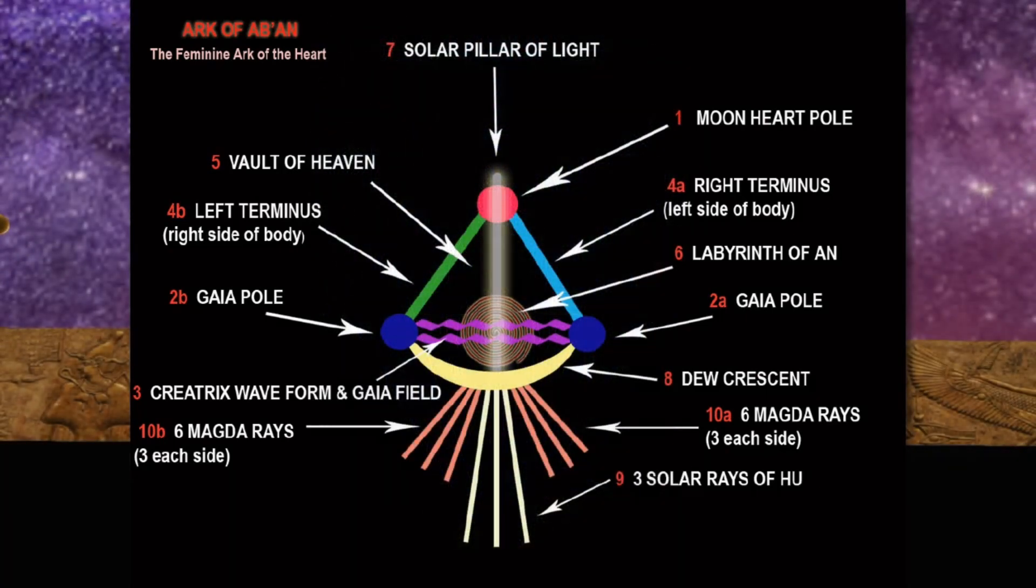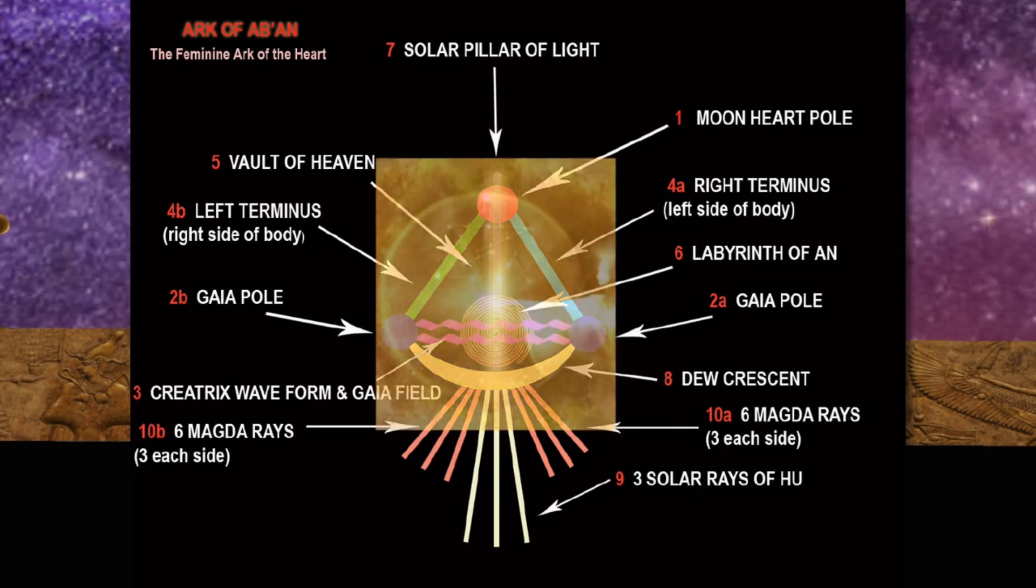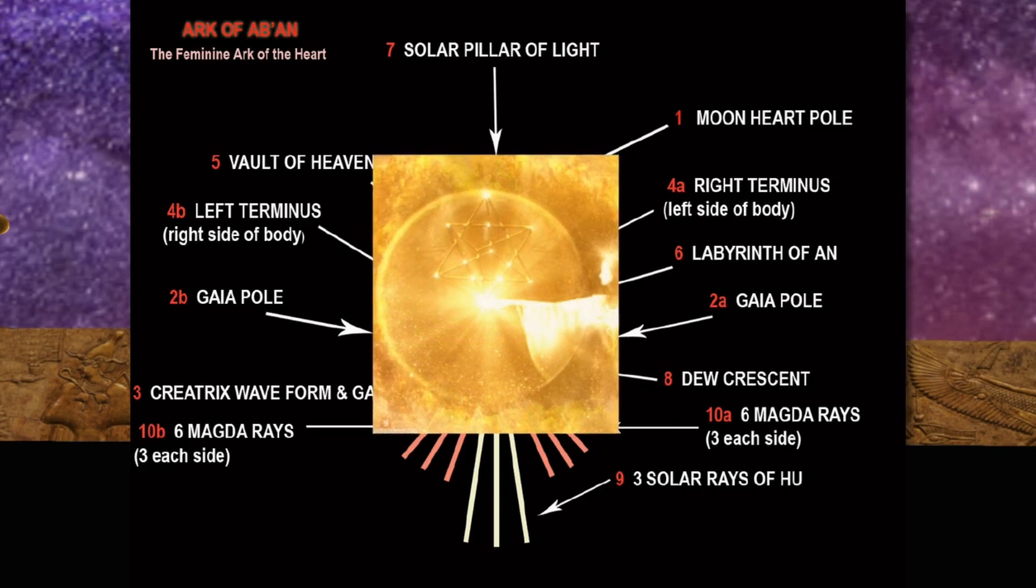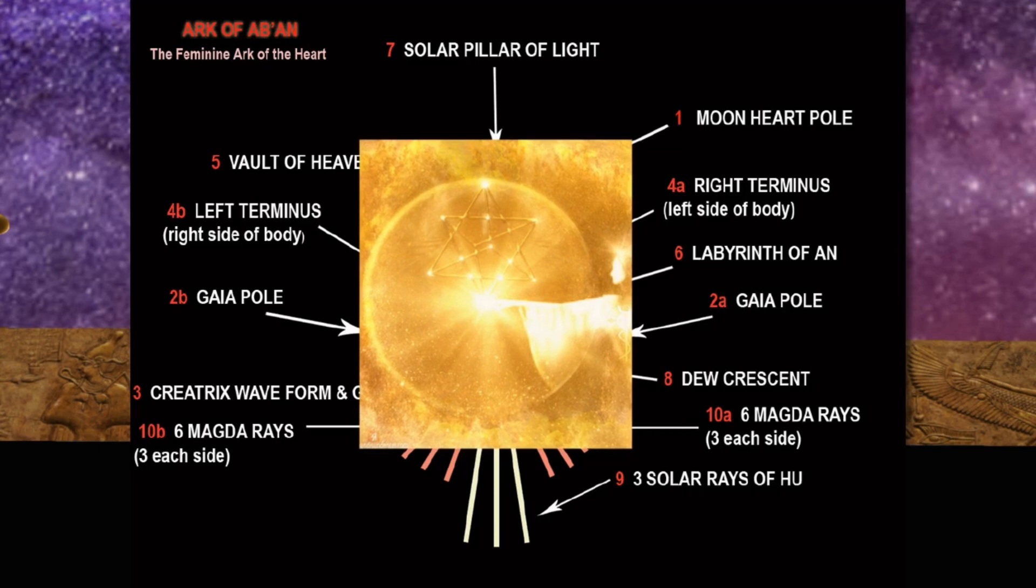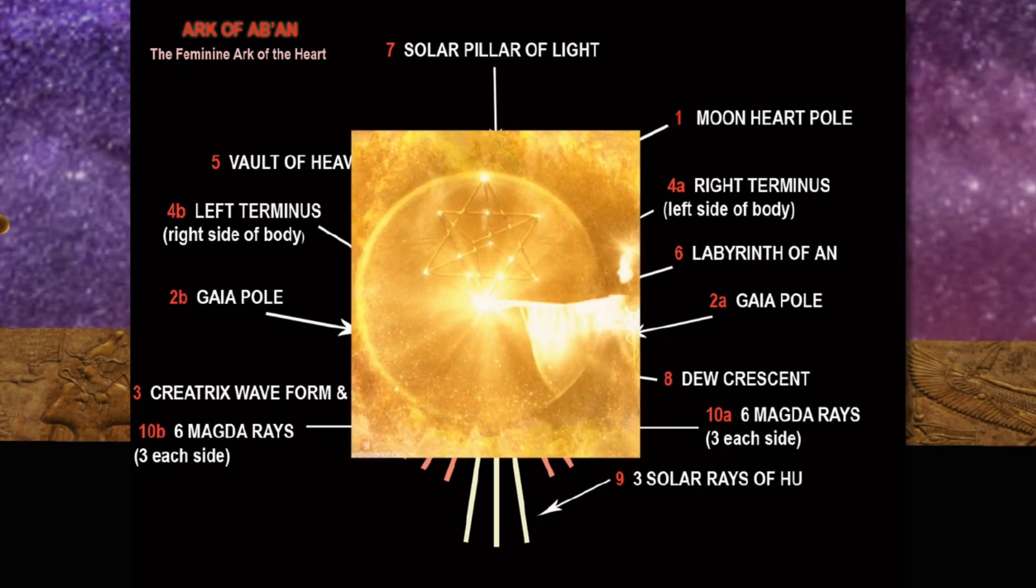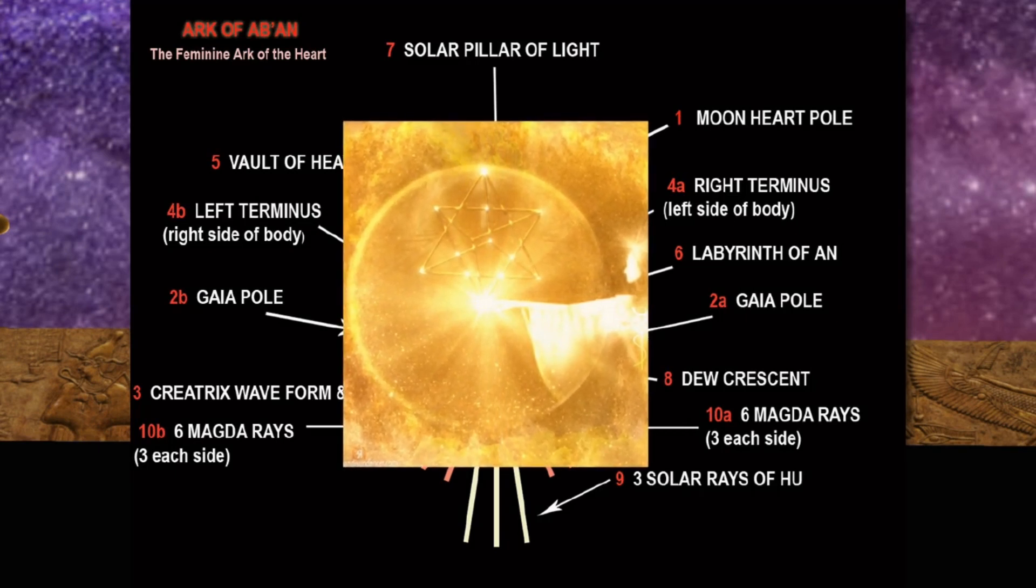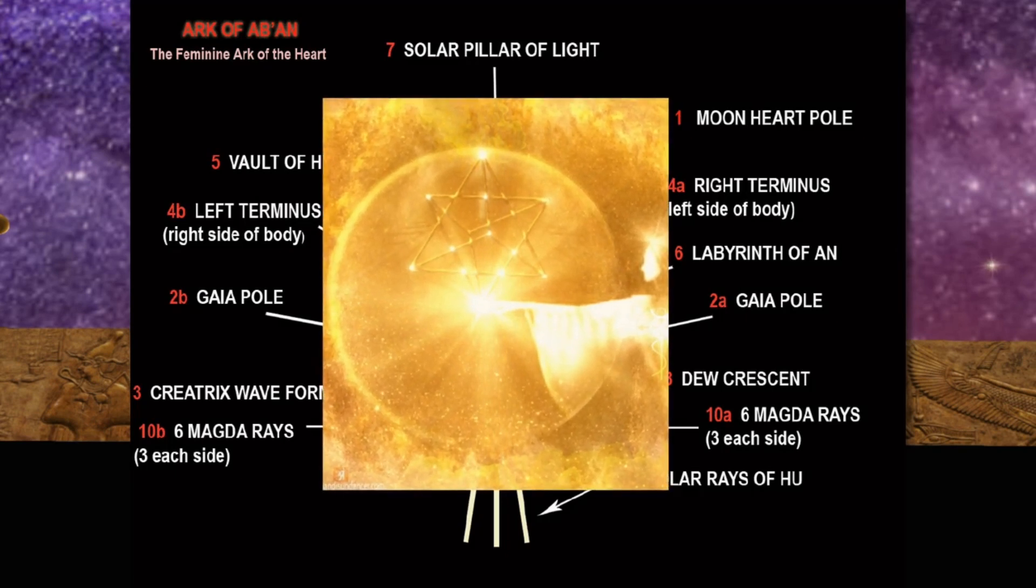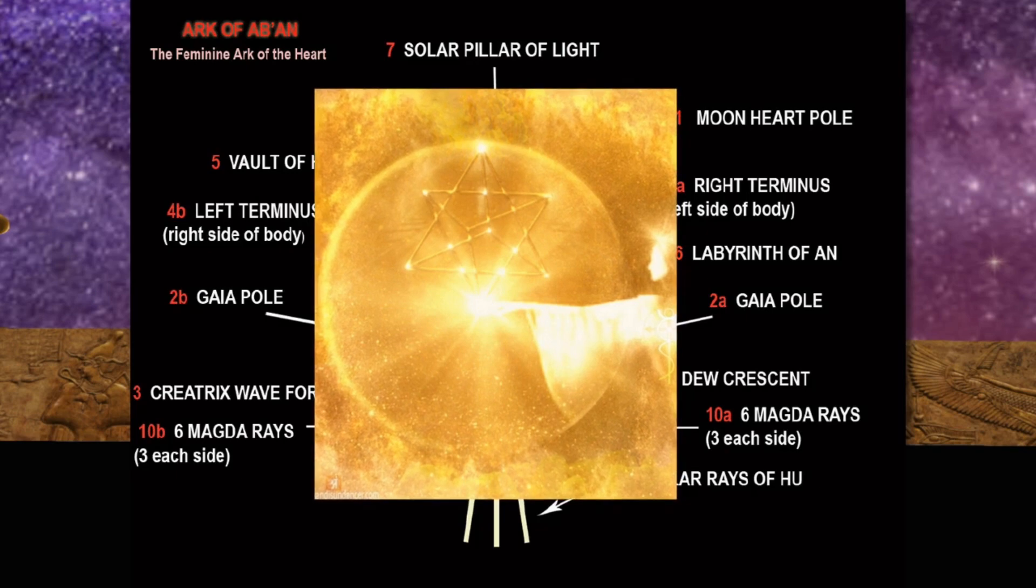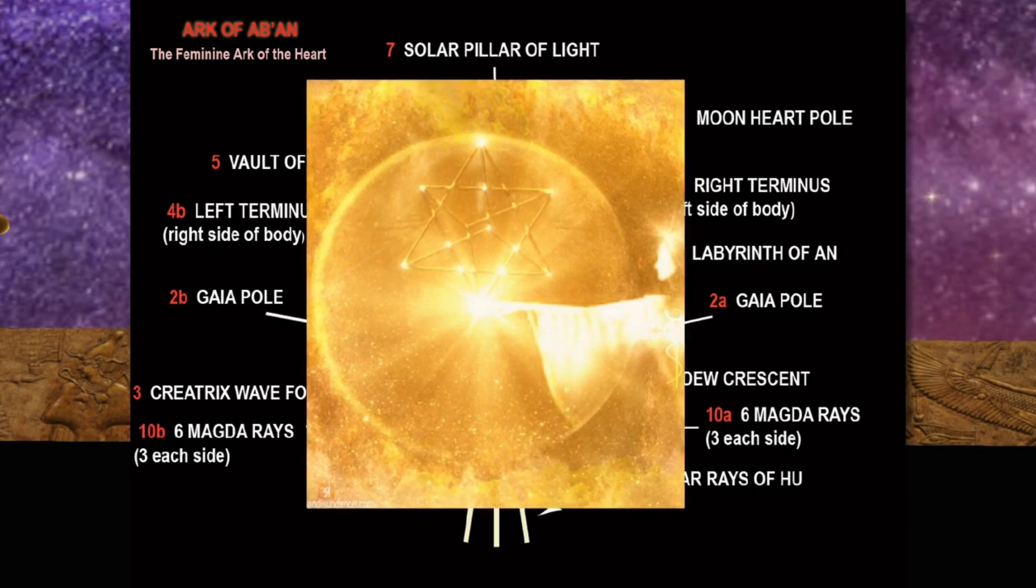The seventh node, Solar Pillar of Light. The inseminating vehicle being drawn into the heart arc from the wellspring of the Solar Logos in the soul. The Solar Logos is a powerful generator of Christ awakening. As the Solar Pillar of Light moves through the Labyrinth of An and the Gaia field, it is the generator for the signals which open the birth canal in the dew crescent.